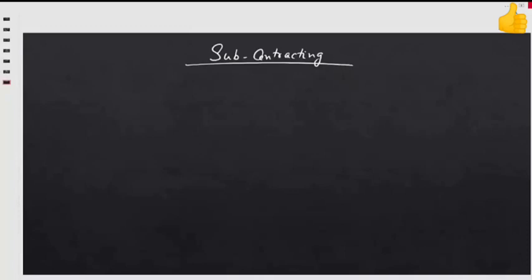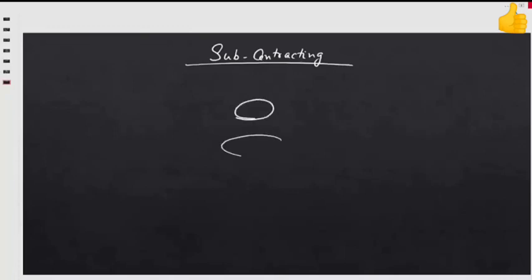For example, wedding cakes are not our coffee shop's specialty — we don't produce wedding cakes. But if we keep getting orders for wedding cakes, we can outsource that to some other company. We give them the material, they manufacture it for us, and then we sell it to our customer. You let somebody — like a wedding cake designer who specializes in wedding cakes — and he is your sub-contractor.